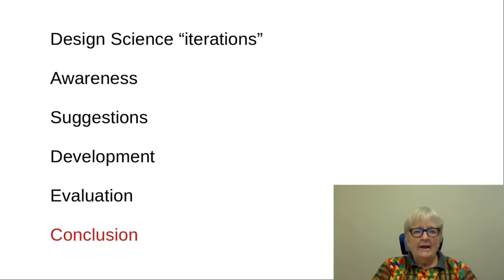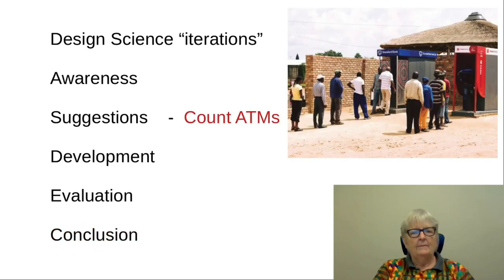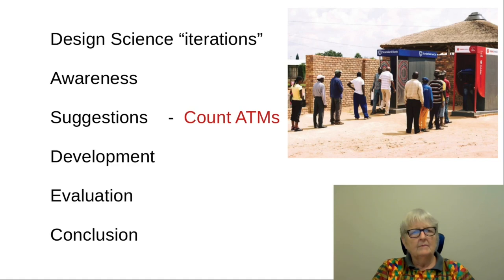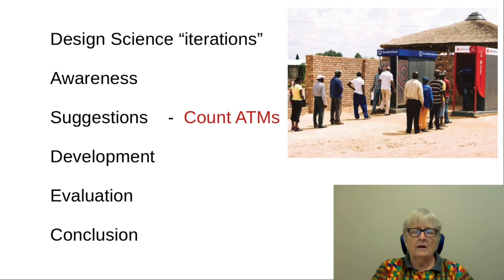It was during these iterations with the stakeholders that a very interesting suggestion was made: that we should count the number of ATMs — automated teller machines — in an area to judge the economic activity. If you think about it, that's actually a fairly smart idea, because the banks, before they installed those ATMs, did their due diligence to decide whether the area could support an ATM. All we were going to do was piggyback on the research that the banks did. So our specific test instantiation is counting ATMs, but other types of research could count other types of landmarks.